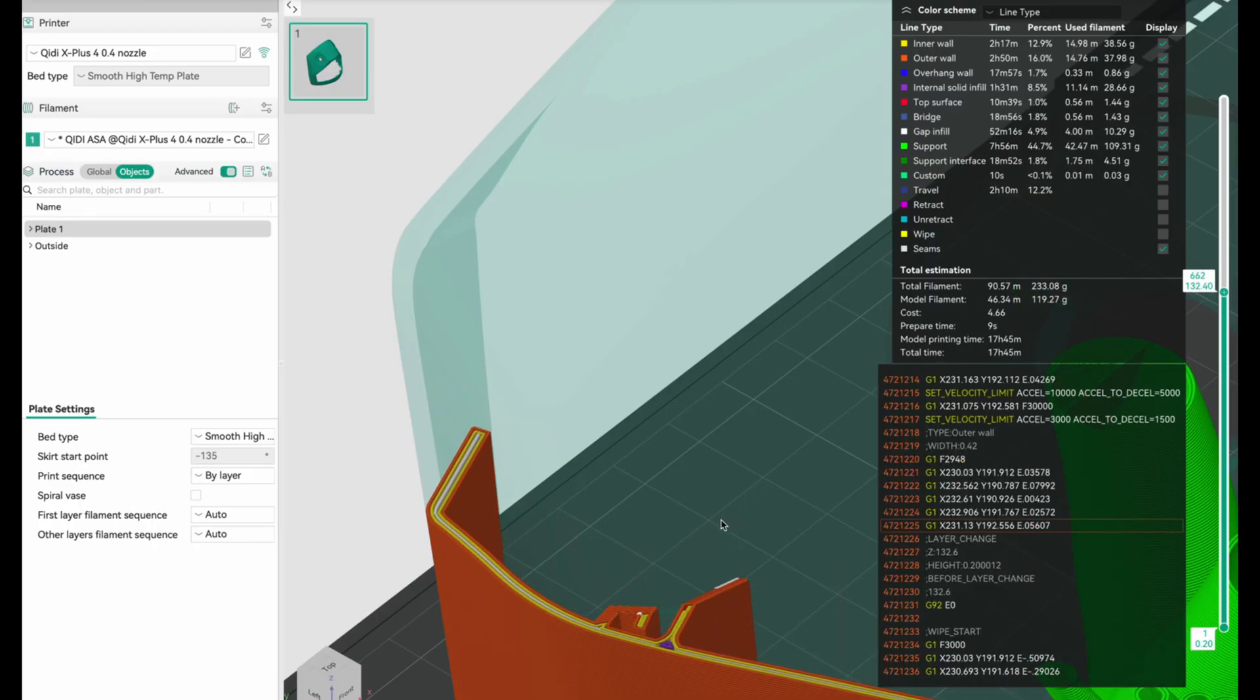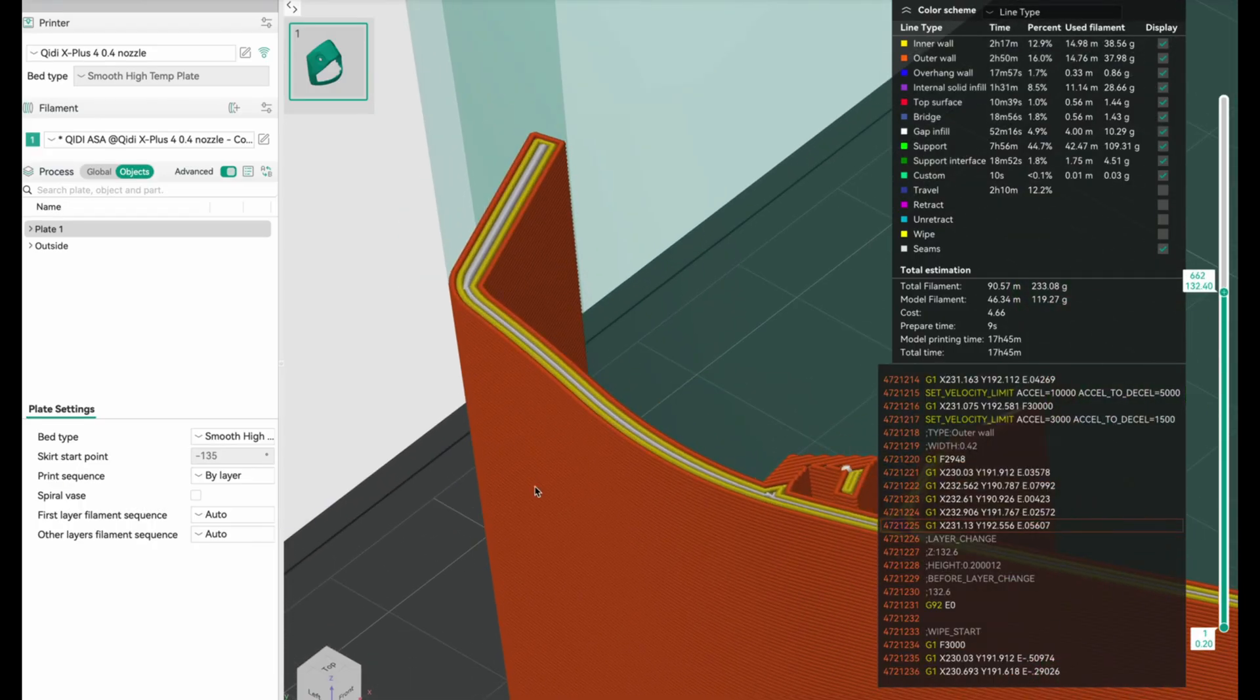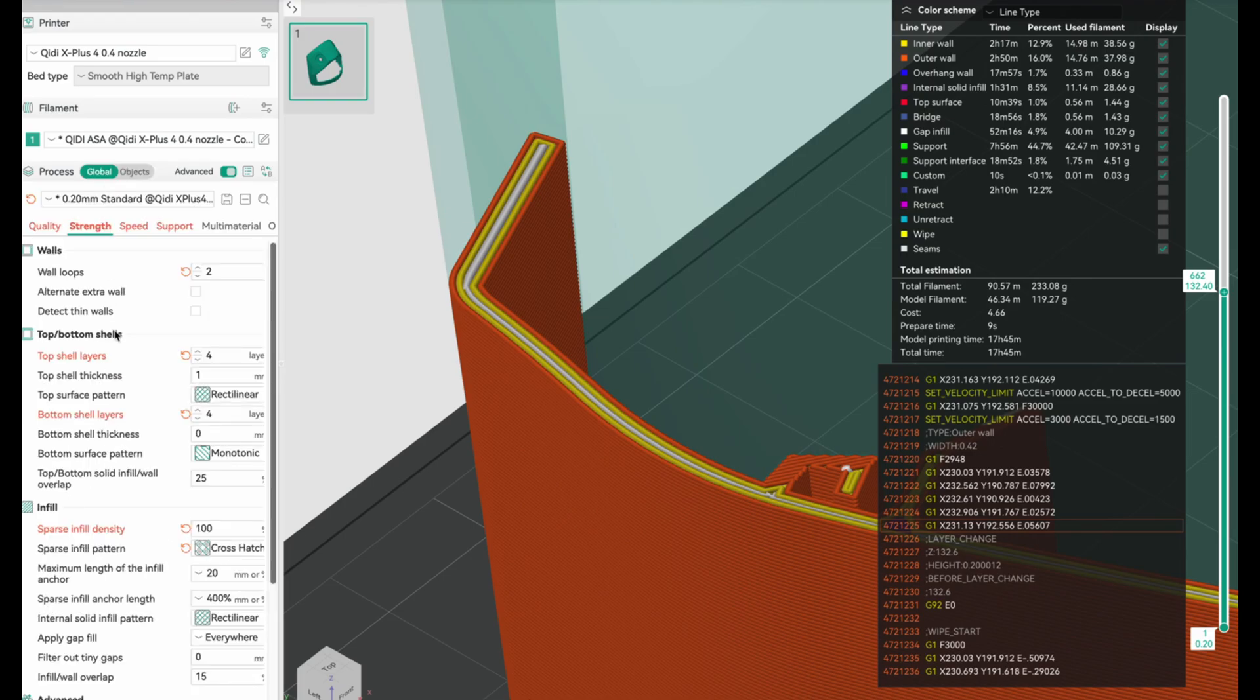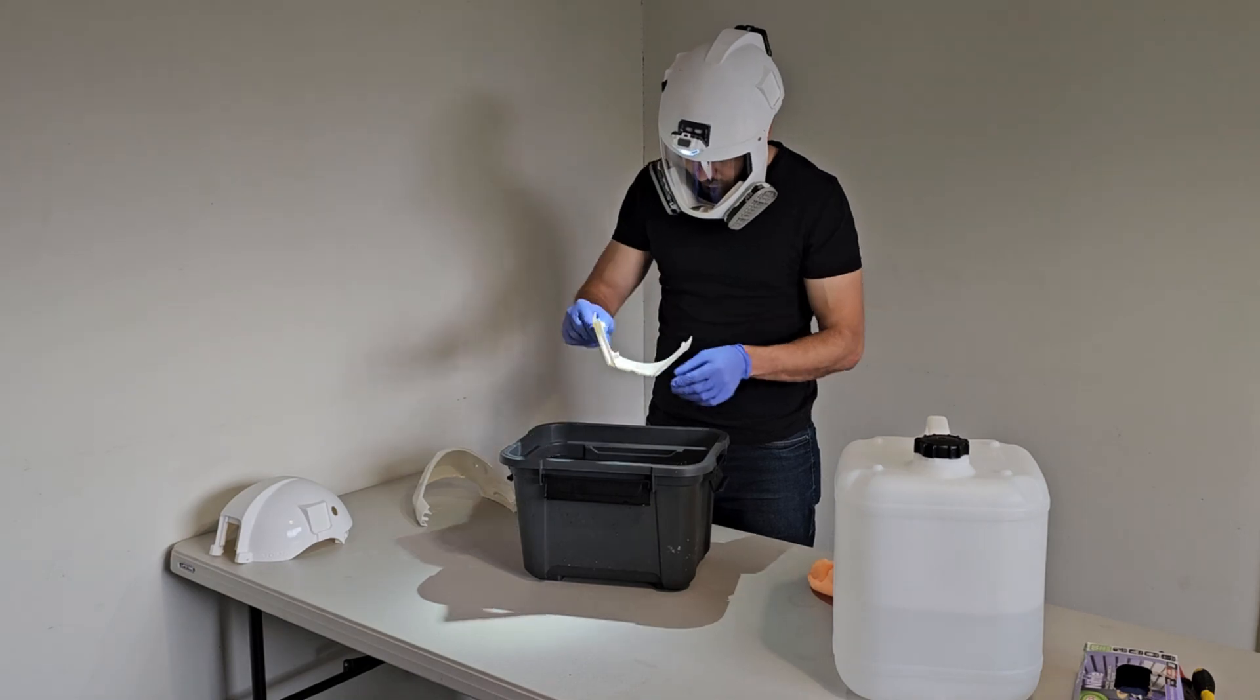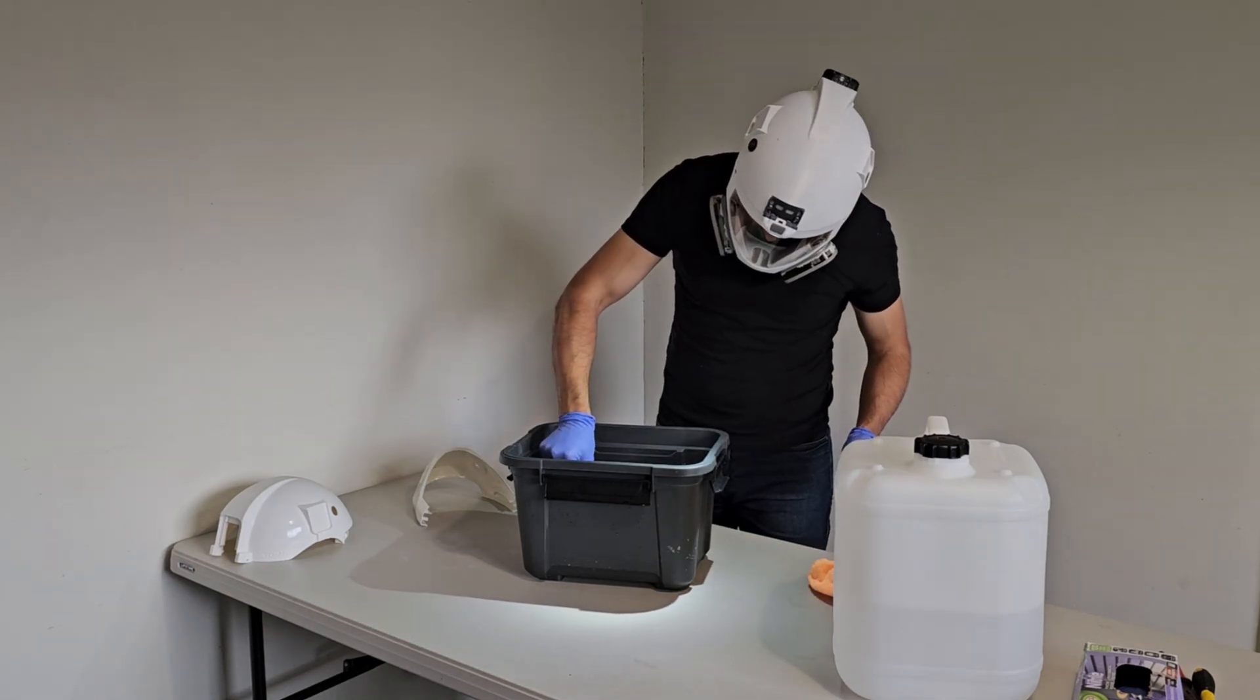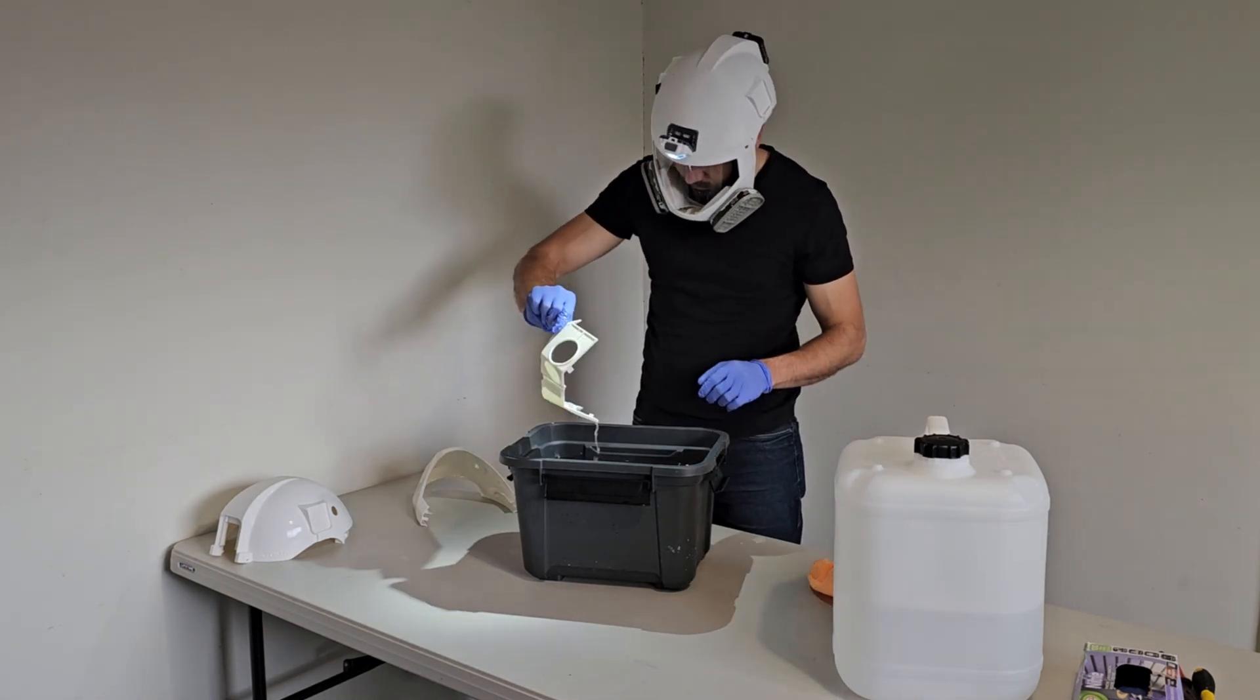I've ruined a whole bunch of parts doing this so make sure your sparse infill settings are correct and your part is 100% solid. The other problem with this technique is the dissolved plastic actually contaminates the acetone reservoir and the acetone needs to be clean for smoothing.